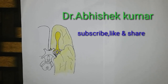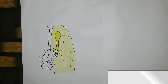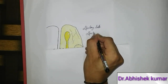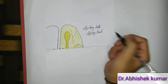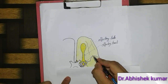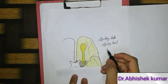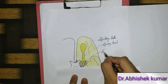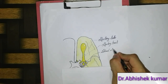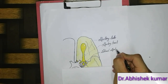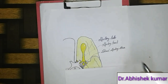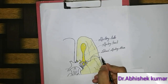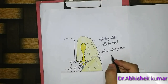Now we will draw the olfactory pathway. We can see this is the olfactory bulb and olfactory tract. I am labeling this one as the lateral olfactory stria.